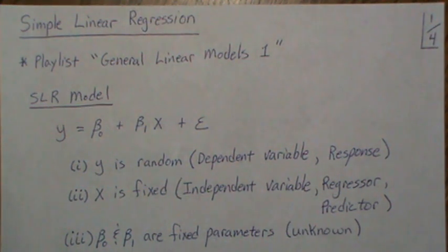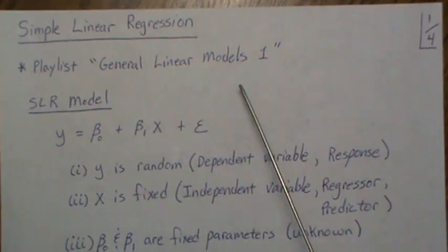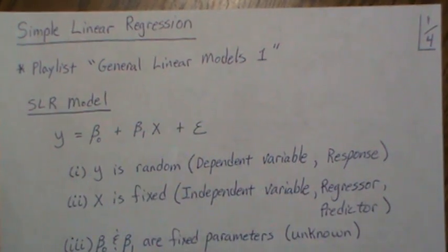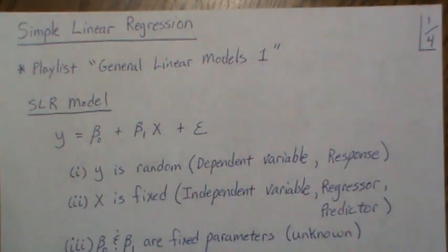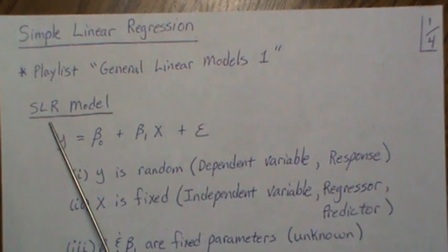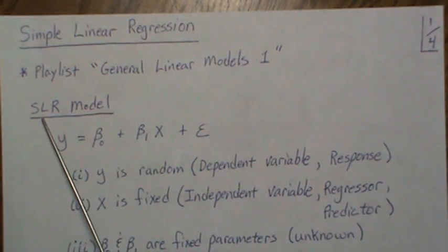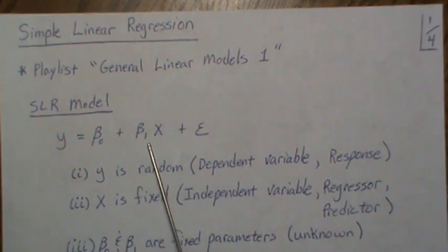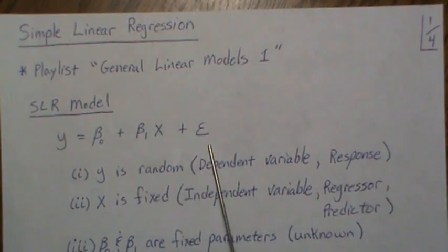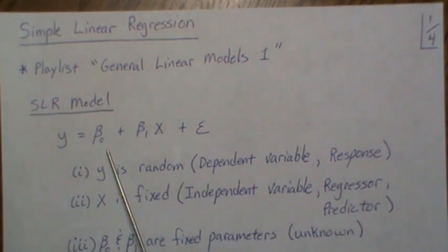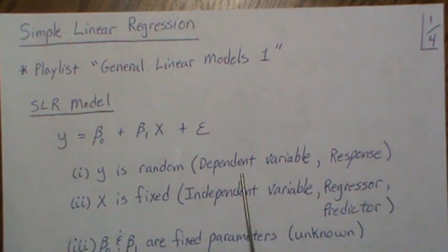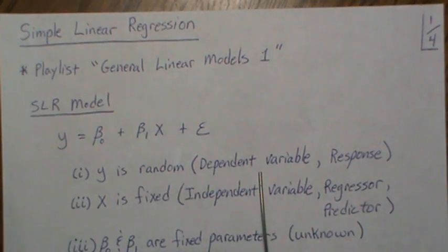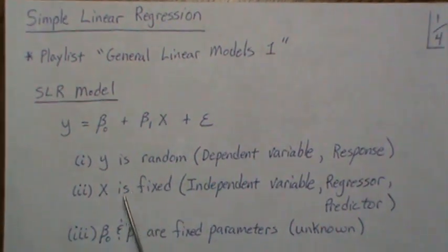Hello, this is the next video in my playlist I'm calling General Linear Models 1, and here we're going to introduce simple linear regression. The SLR model is: y equals beta-naught plus beta-1 x plus epsilon. y is a random component called the dependent variable, sometimes the response variable.